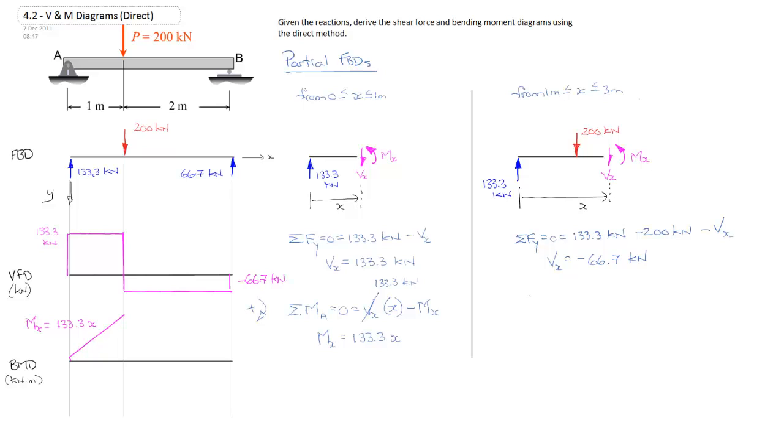One last thing to do. We'll do the sum of the moments about A equal to zero. Again, we'll do clockwise positive, which I will indicate here. We'll set that up. So what do we have? We have 200 kilonewtons multiplied by a distance of one meter, turning it clockwise, so it's positive.